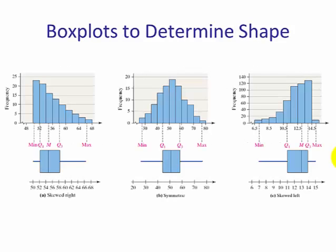Let's look at an example. Here we have three distributions. The first distribution from the histogram, we see that this is skewed right, and this can be seen in the box plot. If you notice, the right tail is longer than the left tail.